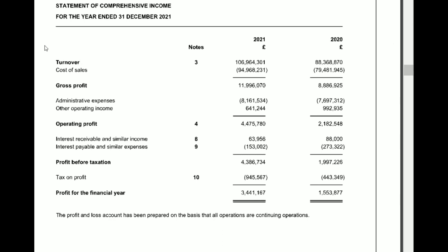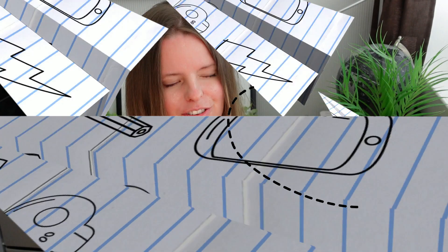Tax is then applied to give us the final amount. In this example, you can see turnover of £106 million, cost of sales of approximately £95 million giving gross profit, and then all the other expenditure items are shown in brackets — negative figures. Income items are positive and expenditure is negative, giving us the bottom-line profit or loss figure.